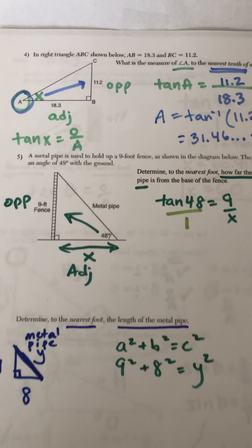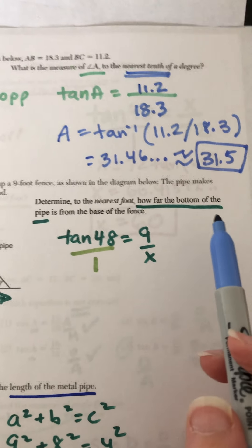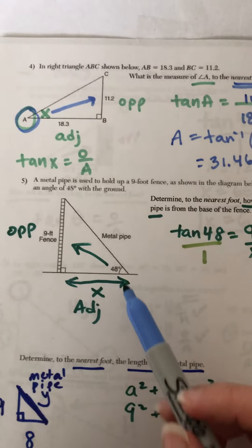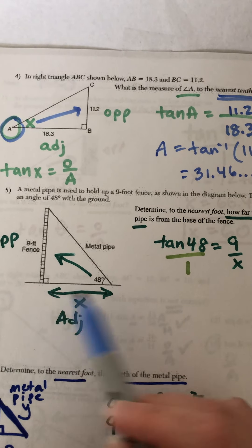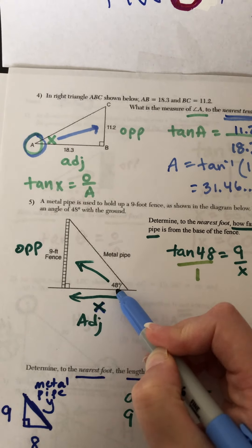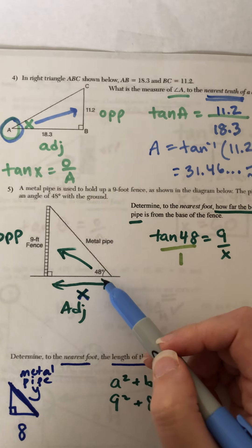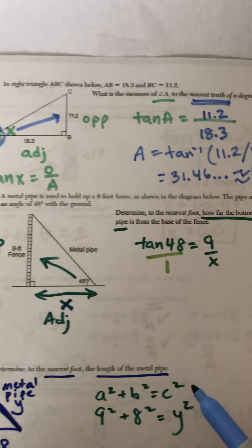The next question has two parts. The first part is determining to the nearest foot how far the bottom of the pipe is from the base of the fence. The pipe is here. The base of the fence is over there. That amount is the unknown X. And 48 going across the 9-foot fence is opposite. And next to it, X is the adjacent. So that's tangent.